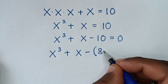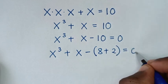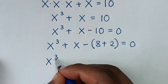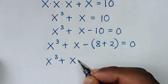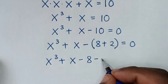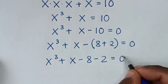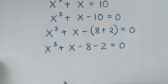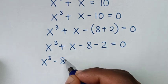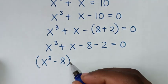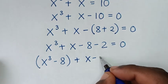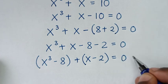Then in the next step it will be x power 3 plus x, and 10 is the same as 8 plus 2. Taking the negative inside the bracket gives minus 8 then minus 2 is equal to 0. Then we group x power 3 with minus 8, and x with minus 2, equal to 0.